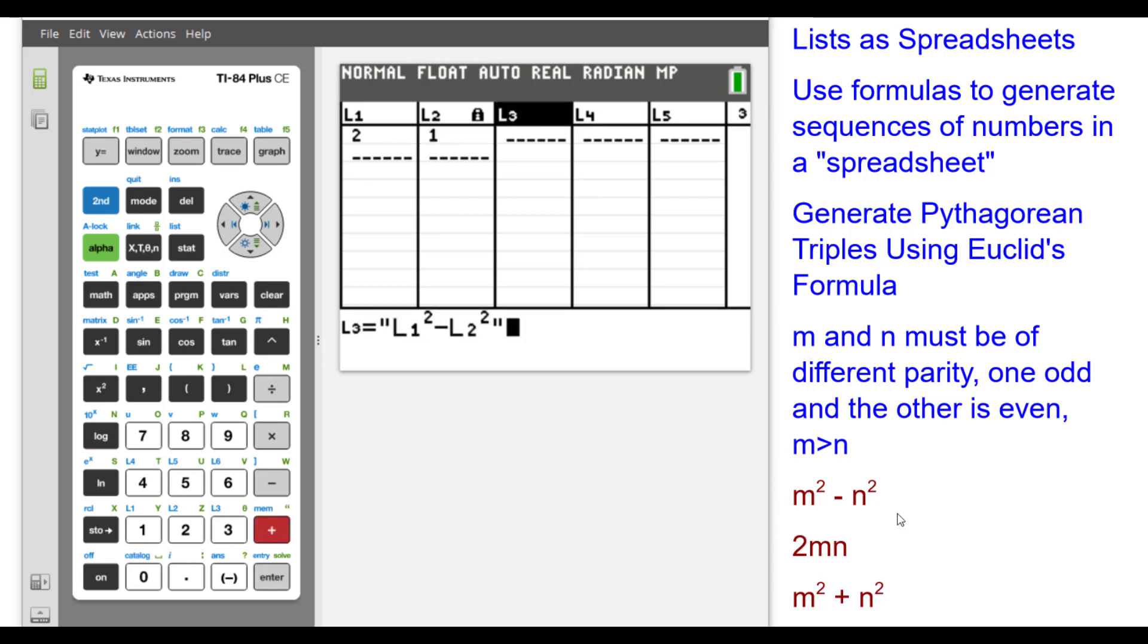In list 3, I'm going to type in this formula, but I'm going to put quotes around it to put the lock on. And M is L1 and N is L2. So press enter.